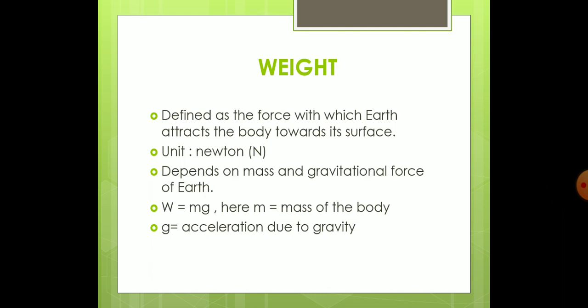The unit of weight is newton. You should be very careful when writing newton: in words, write it with a small 'n' — n-e-w-t-o-n. But when writing the symbol, it should always be capital N. You may ask: newton is the name of a scientist, a proper noun, so why not write capital N? In physics, when writing units, we use only small letters even for scientist names. The symbol, however, is capital N.